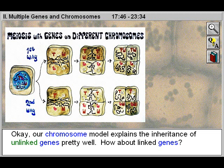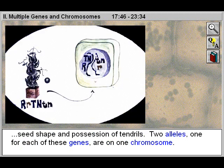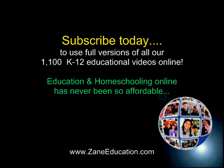How about linked genes? You probably guessed the answer already. Linked genes are on the same pair of chromosomes. Consider our pea plant example for the linked genes: seed shape and possession of tendrils. Two alleles, one for each of these genes, are on one chromosome, and two alleles, one for each of these genes, are on the other chromosome.